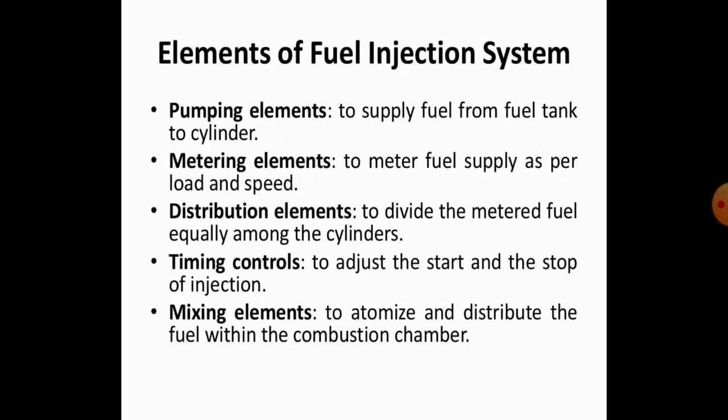The elements of a fuel injection system are: first, the pumping element, which ensures supply of fuel from the fuel tank to the cylinder. Second, the metering element, which meters the fuel supply as per the load and speed. The distribution elements divide the metered fuel equally among the cylinders. The timing control adjusts the start and stop of injection. The mixing elements atomize and distribute the fuel within the combustion chamber.